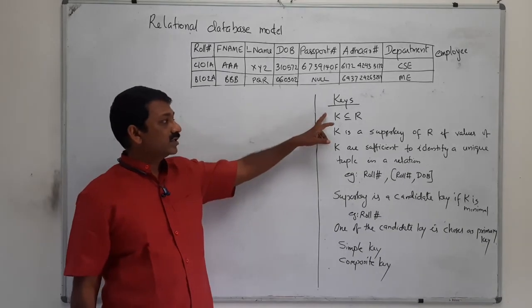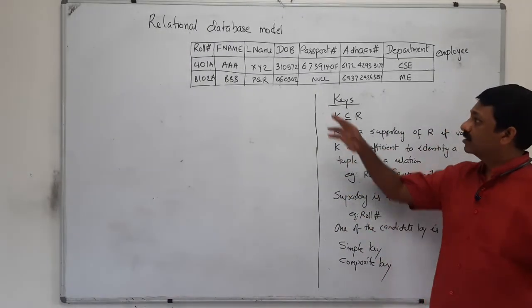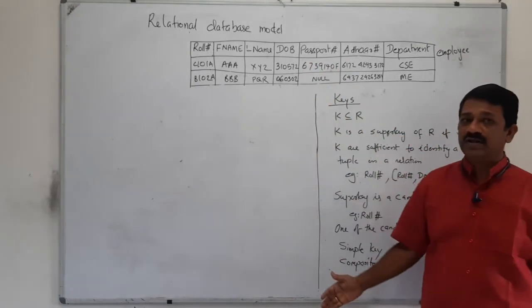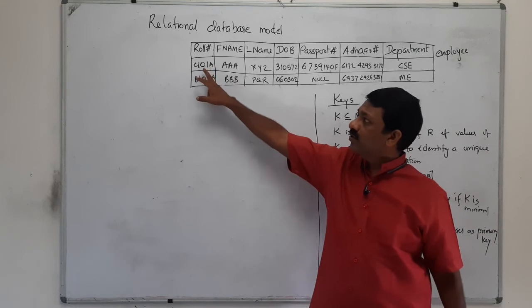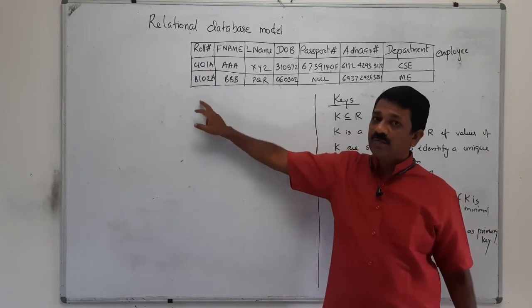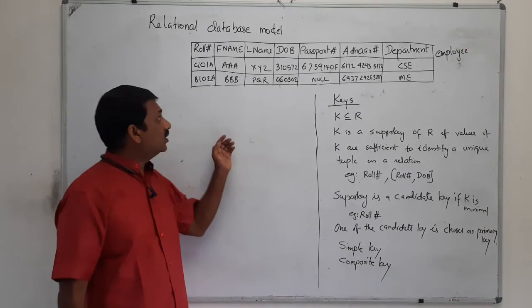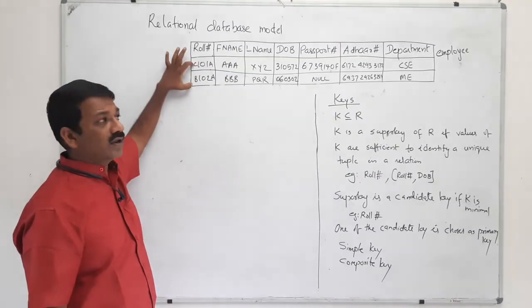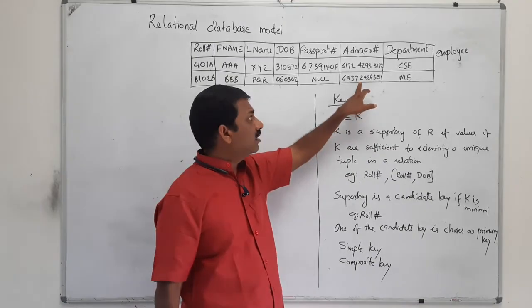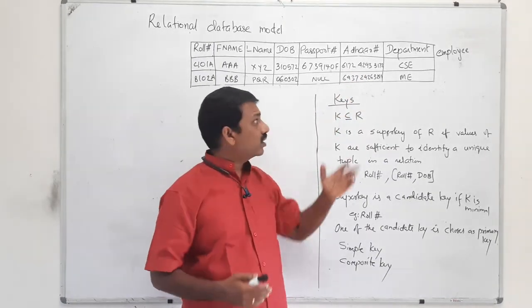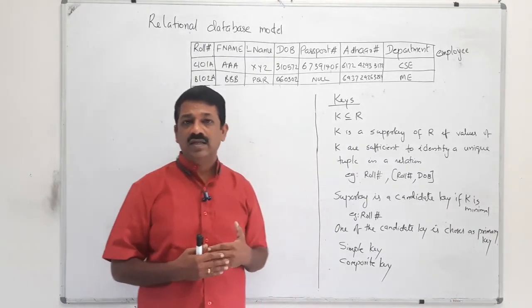Today we are continuing with our discussion on the relational data model. In the relational data model, for uniquely identifying a particular tuple — there may be thousands of records in a table — we use a key like roll number. Each roll number is different, so no two employees have the same roll number. Similarly, Aadhar number can also be used as a primary key, as no two persons can have the same Aadhar number. So both Aadhar number and roll number can be used as the primary key.